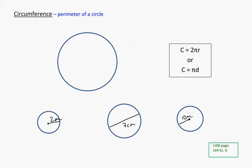This is about the circumference of a circle. The circumference is really just a special name for the perimeter of a circle. We need to know a little bit about parts of a circle before we can really use this.